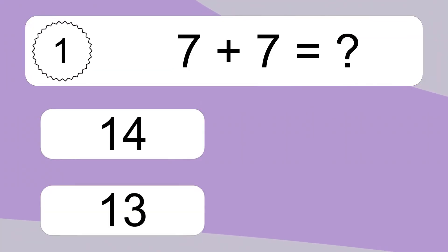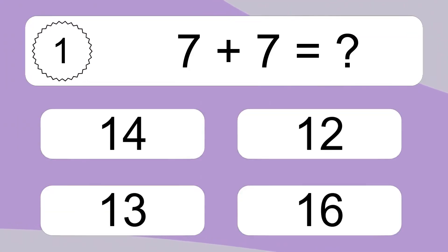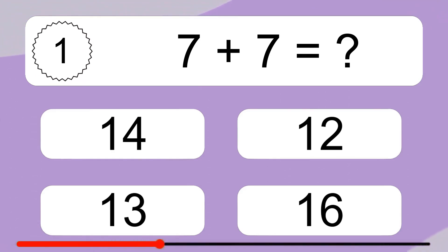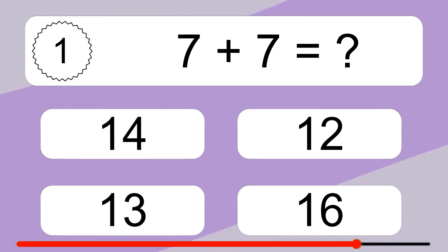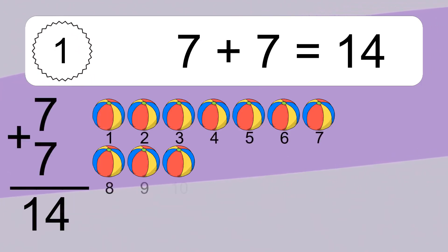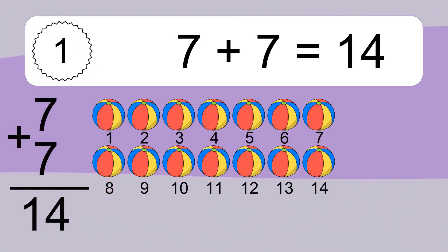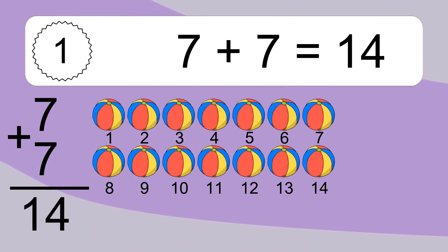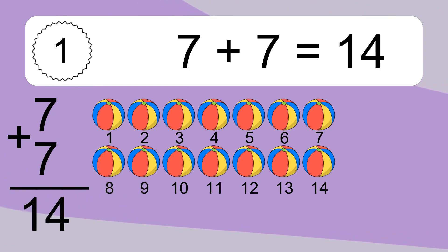7 plus 7 equals what? 7 plus 7 equals 14. Let's count it. 1, 2, 3, 4, 5, 6, 7, 8, 9, 10, 11, 12, 13, 14.